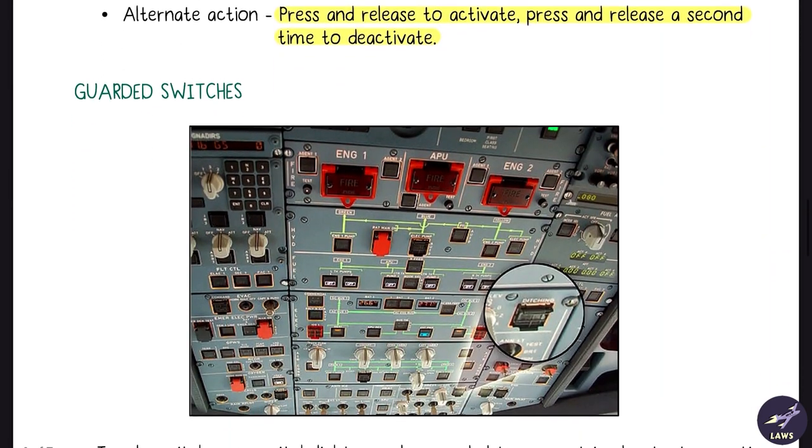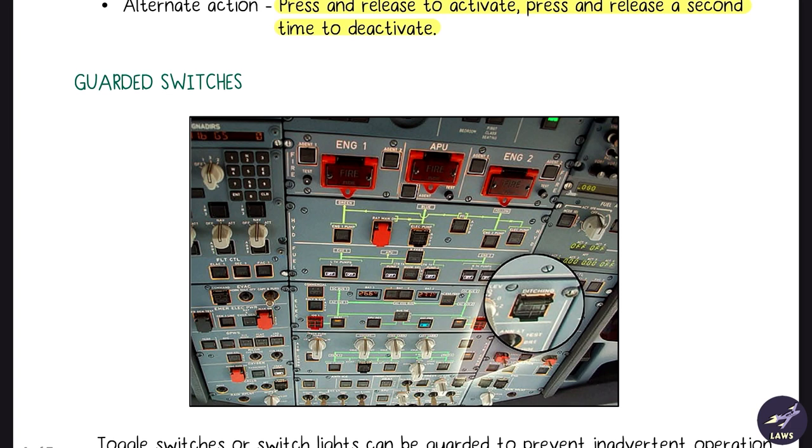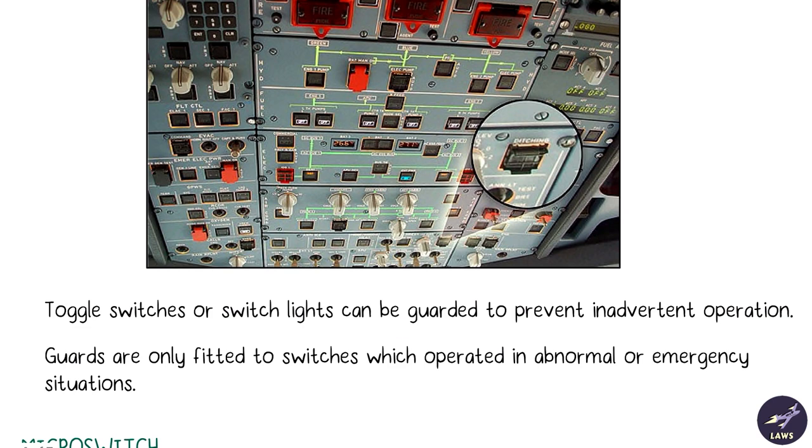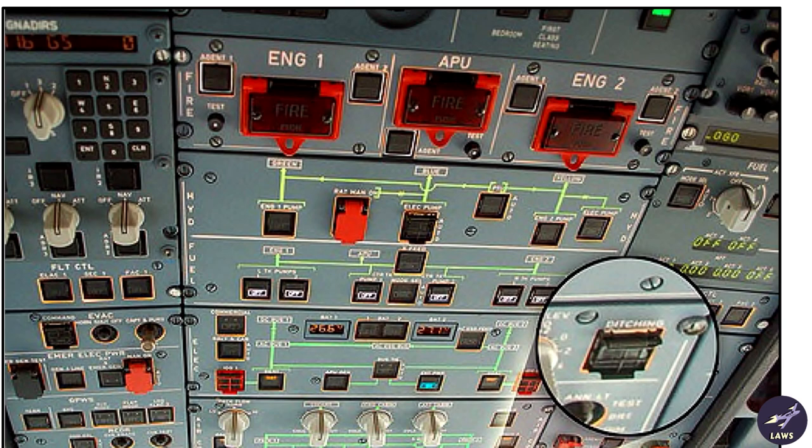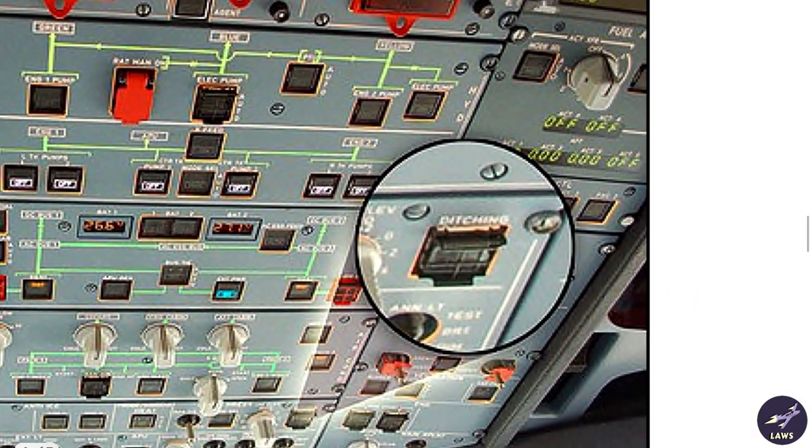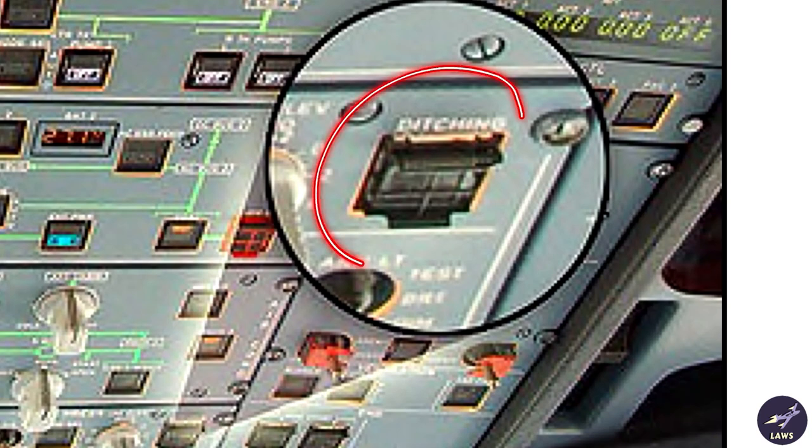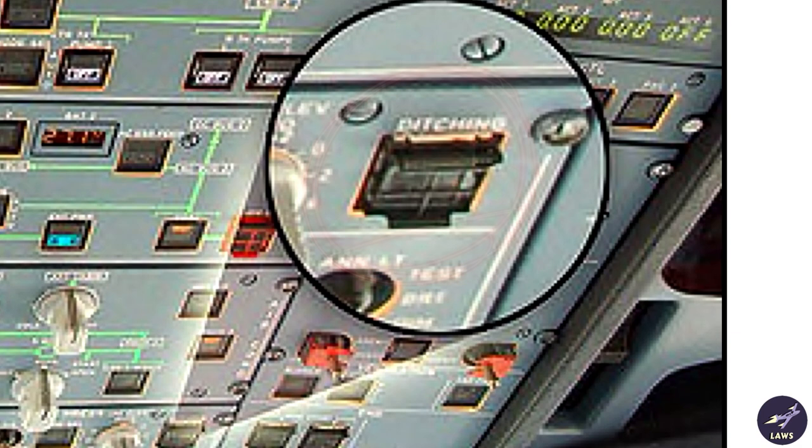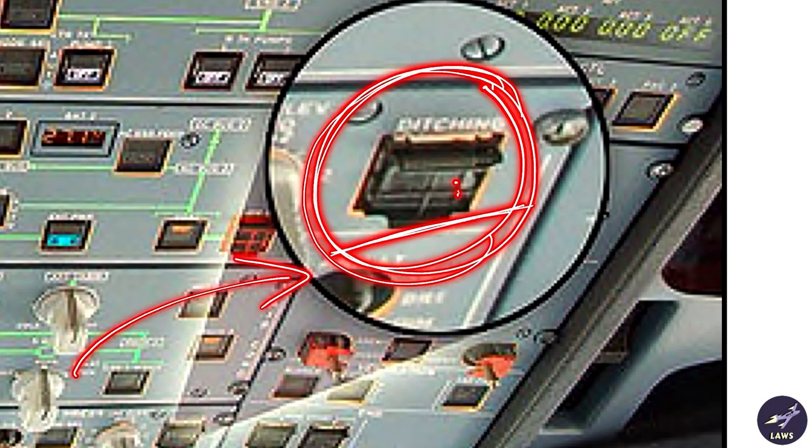Then we have guarded switches. These switches are to be used only in case of emergencies. They are guarded to prevent inadvertent operation. As you can see here, these are the engine fire extinguisher switches - engine one, engine two, APU, and the ditching switch. The ditching control is used in case of water landing and basically closes all the valves so there will be no water entering from outside.